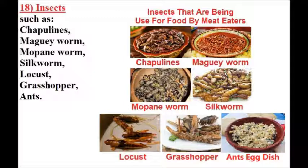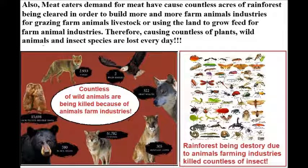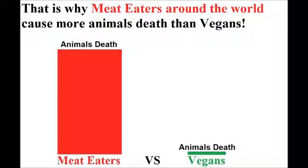Also, meat-eaters' demand for meat has caused countless acres of rainforest being cleared in order to build more and more farm animal industries for grazing livestock, or using the land to grow feed for farm animals. This is causing countless plant, wild animal, and insect species to be lost every day. That is why meat-eaters around the world cause more animals' deaths than vegans.